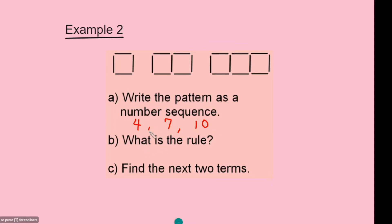Question B asks: what is the rule? Looking at the sequence, you find that it increases by an addition of 3, so the rule is 'add 3'. And question C says find the next two terms — since the sequence increases by 3, the next term after 10 will be 13 and then 16. So we have 13 and 16.